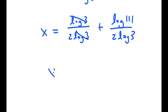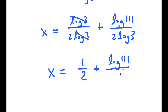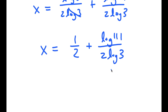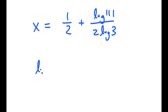So now these two cancel out, I get x is equal to 1 half plus log of 111 over 2 times log 3. Now log of 111 is equal to 2.045.